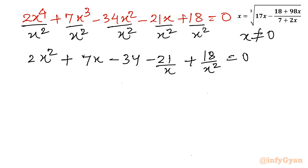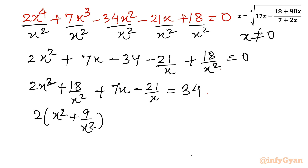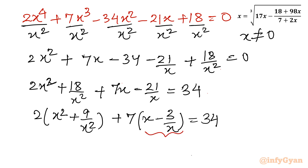Let us consider the first and last terms together. I will write 2x squared plus 18 over x squared, then 7x minus 21 over x, and move 34 to the right-hand side. Taking out 2, we get 2 times (x squared plus 9 over x squared) plus 7 times (x minus 3 over x) equals 34.